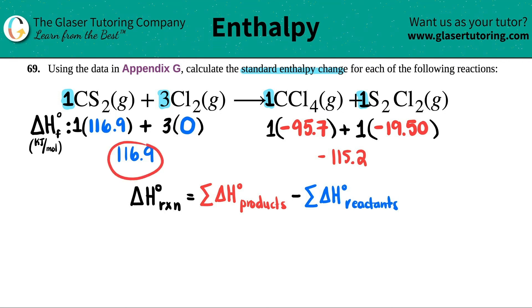And now since I have one number for the reactants, one number for the products, I'm ready to plug it into my formula. Delta H, this little notch thing means standard, that it came from the tables. And this equals the sum of the products, negative 115.2 minus the reactants, 116.9.